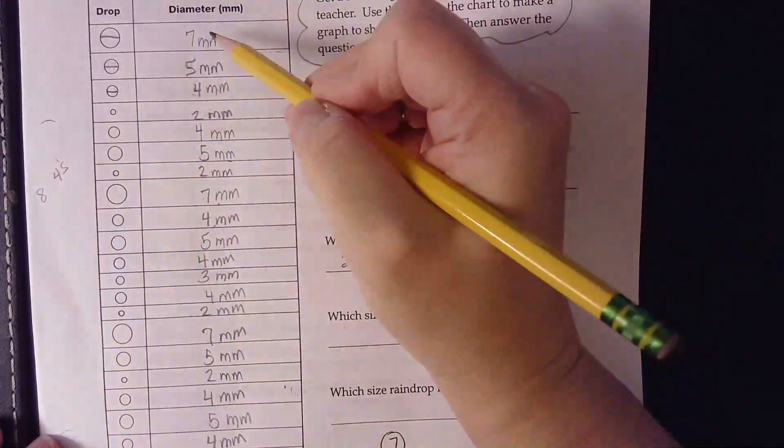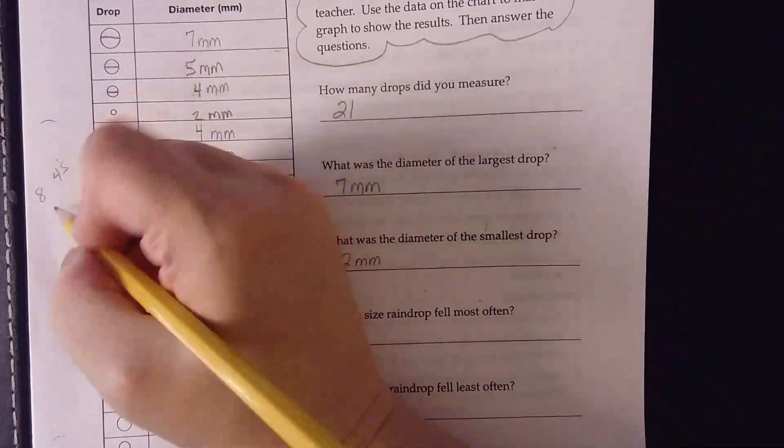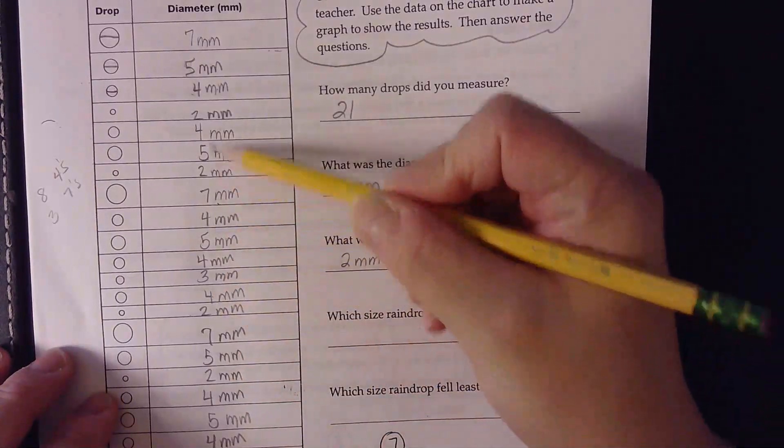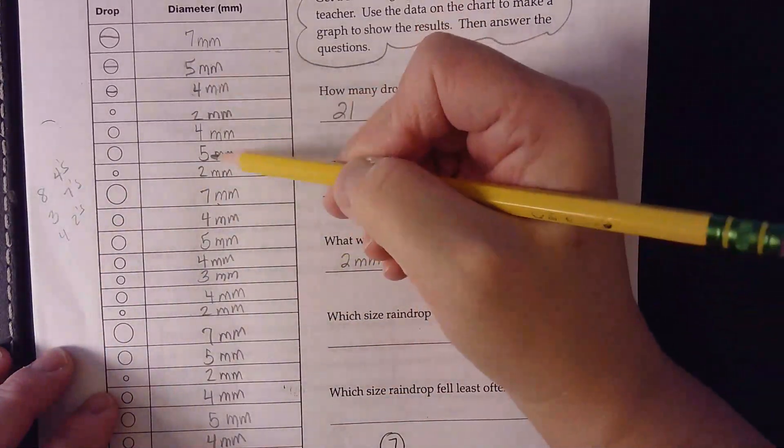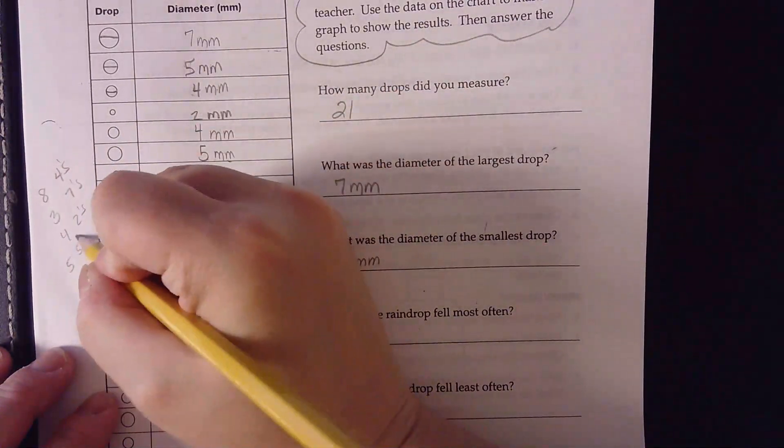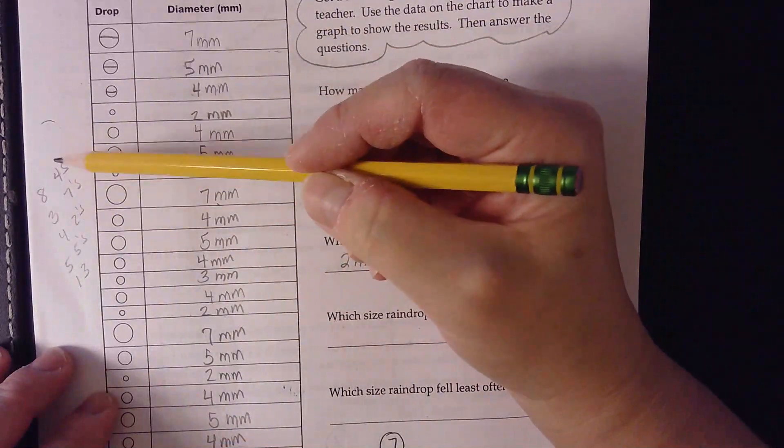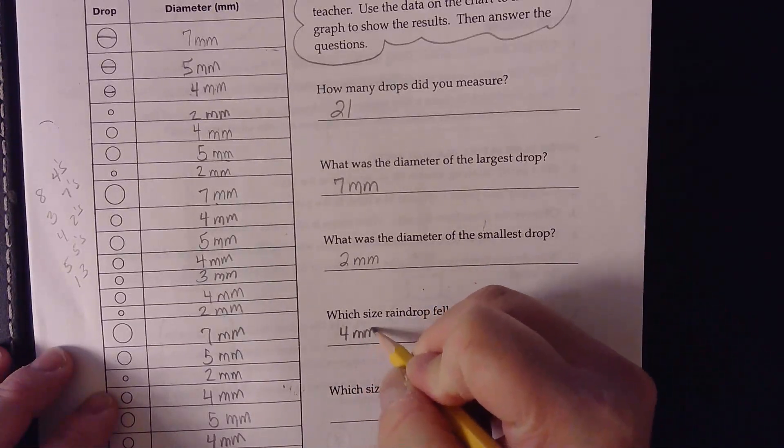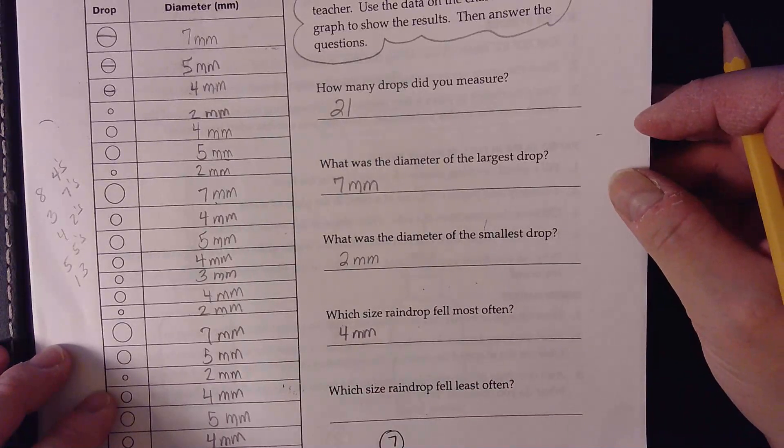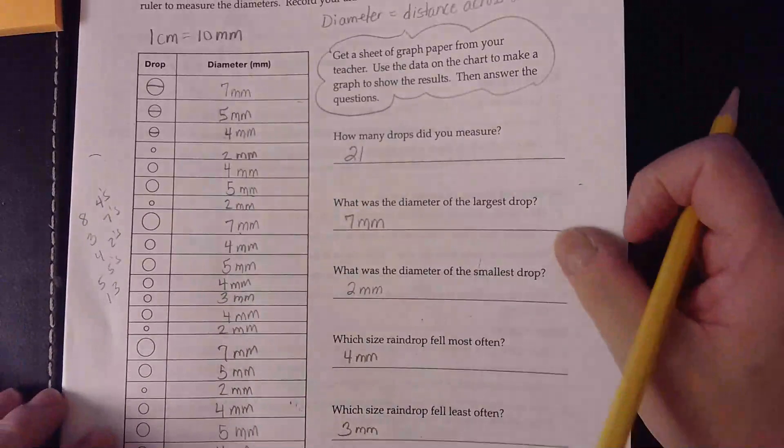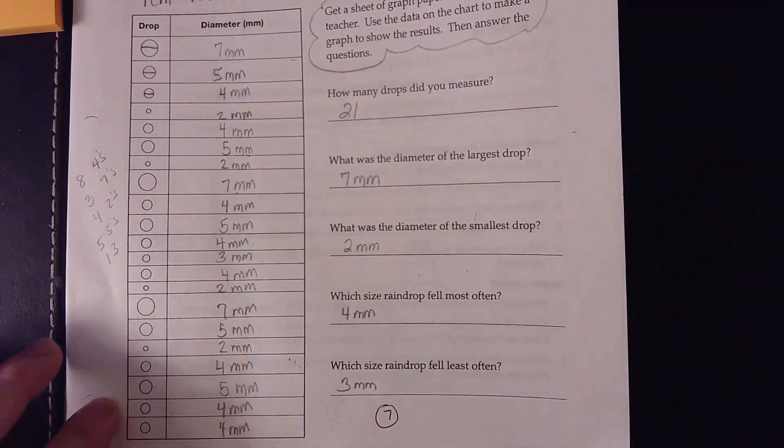So we had eight that were fours and we had one, two, three that were sevens and one, two, three, four, five that were fives. So we had two, four twos, we had one three. We had twos, threes, four, five, and seven. All right, so it looks like the one that fell the most often was four millimeters and which one fell the least often would be three millimeters because there was only one of them that was three millimeters. All right, so now what we need to do is take a look at this information that we have here. Make sure you have all of that down. We are going to graph this information. So go ahead and pause the video.